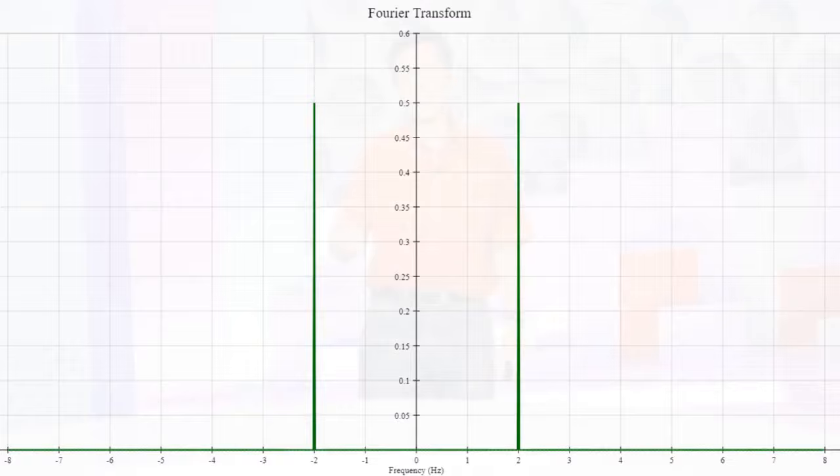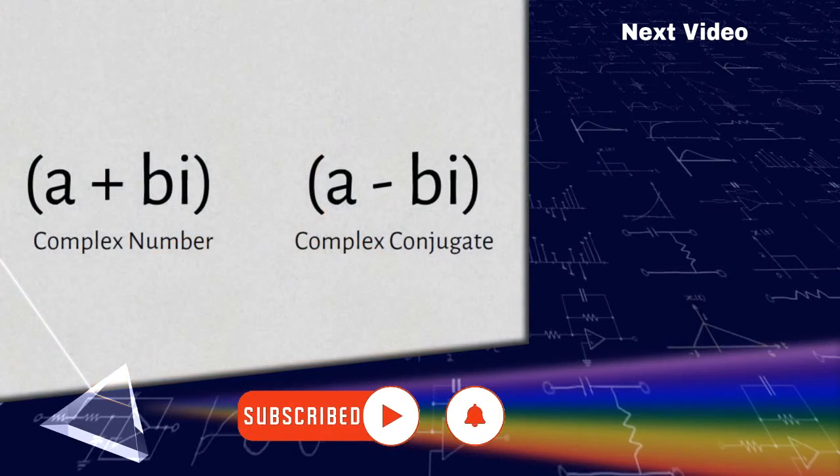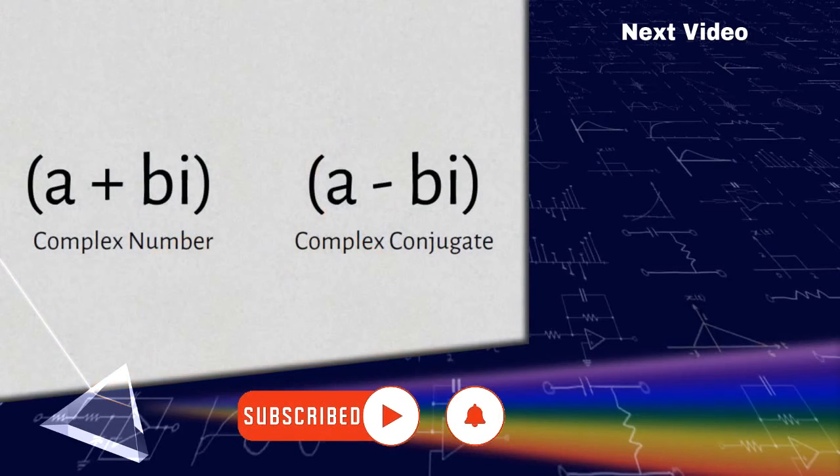So here's your challenge for this video. Why does the Fourier transform of a signal look like this? And why this negative frequency? We'll find out in the next video. I'll just leave you with one clue though. It has to do with the complex conjugate. You'll find more on imaginary numbers and the complex conjugate in chapters 4 and 5 of my book, How the Fourier Series Works. The link is in the description below.